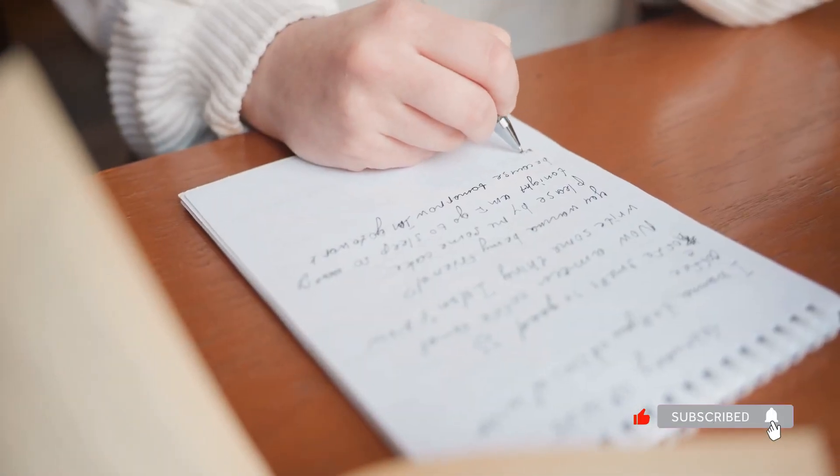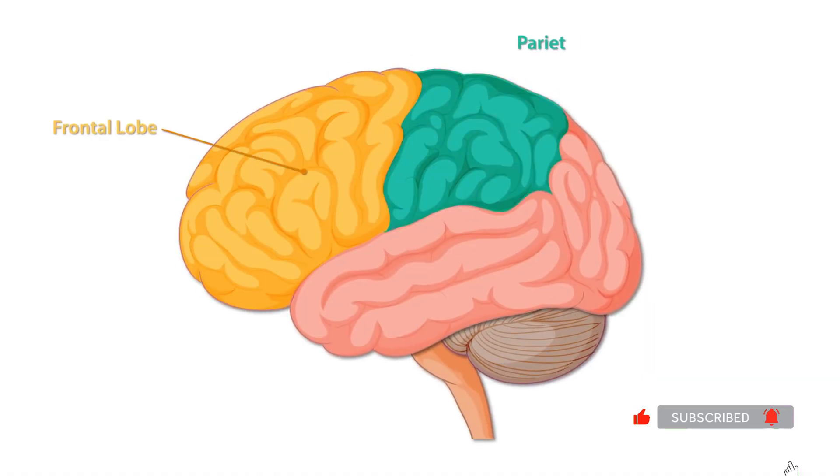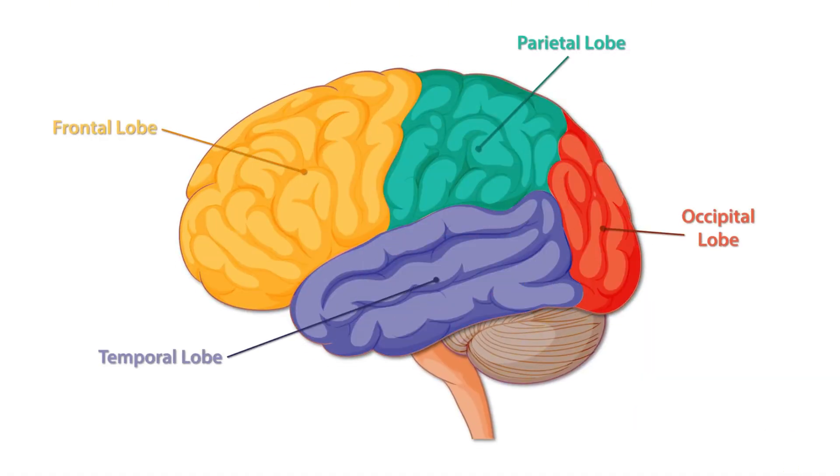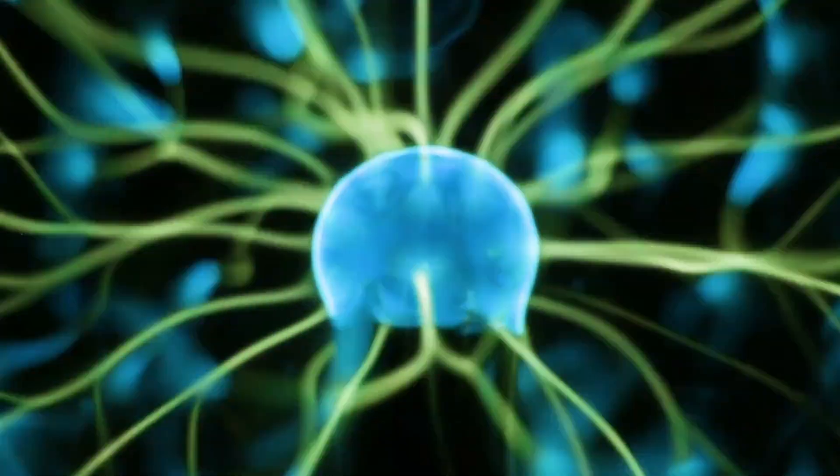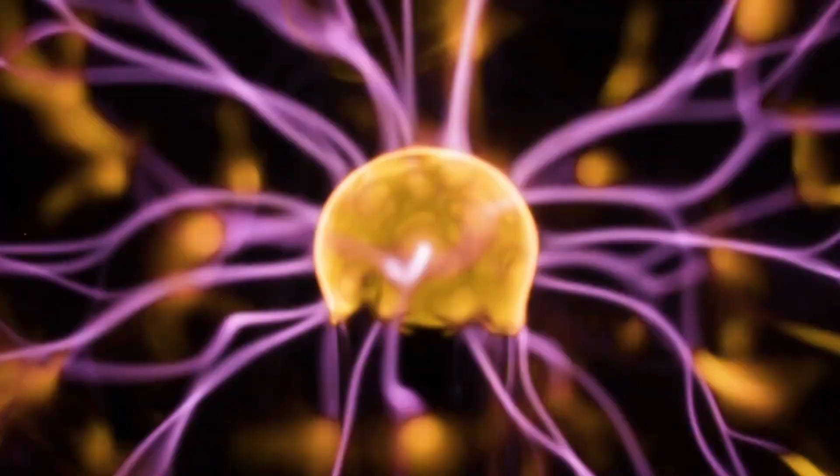Writing by hand engages your motor cortex, visual cortex, and comprehension centers simultaneously. This multisensory activation creates stronger neural pathways and better memory consolidation.